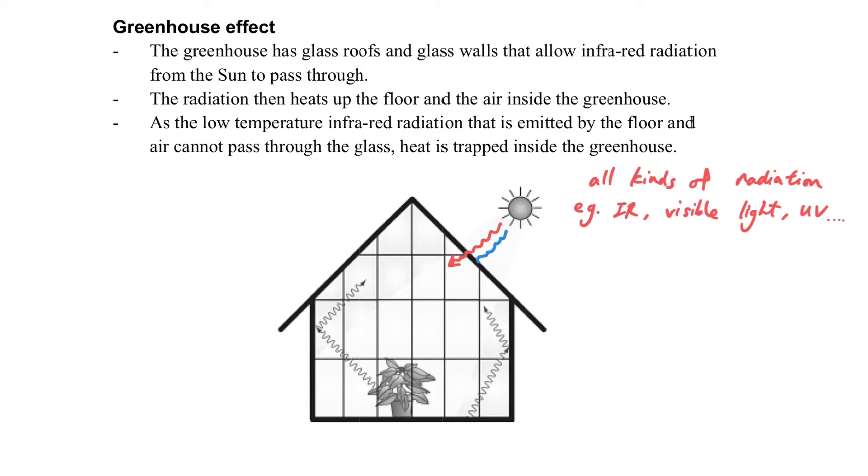So when we consider the greenhouse, all the radiation can get into the house. And then the objects inside will be warmed up because of the absorption of different kinds of radiation, and then they will re-radiate again.